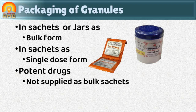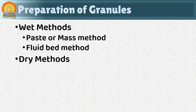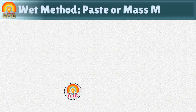Granules are prepared by two methods: wet methods and dry methods. The massing or mass method and fluid bed method are wet methods. Use of a roll compactor and the slugging method are dry methods. Let's discuss these methods one by one.